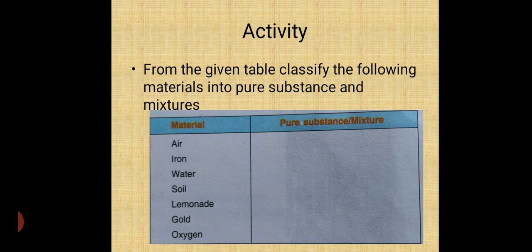So, my dear students, here is one activity. Some examples of matter or material are given here and you have to identify whether these substances are pure or mixture. Pure means it is in the fixed proportion and mixture means it may be in any proportions. Examples are air, iron, water, soil, laminoid, gold and oxygen. You have to write this activity in your notebook. You have to just write in front of them whether they are pure substance or mixture.